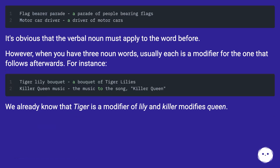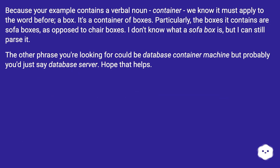It's obvious that the verbal noun must apply to the word before. However, when you have three noun words, usually each is a modifier for the one that follows afterwards. We already know that Tiger is a modifier of Lily and Killer modifies Queen. Because your example contains a verbal noun — container — we know it must apply to the word before: a box. It's a container of boxes. Particularly, the boxes it contains are sofa boxes, as opposed to chair boxes. I don't know what a sofa box is, but I can still parse it. The other phrase you're looking for could be database container machine, but probably you'd just say database server. Hope that helps.